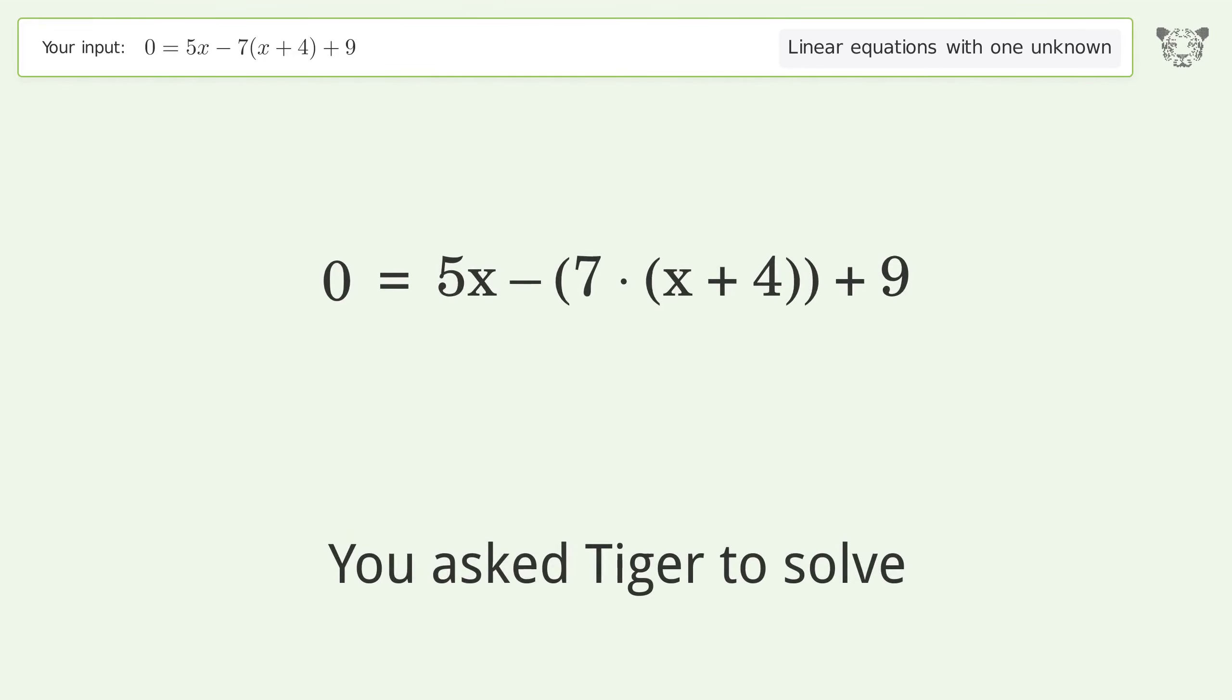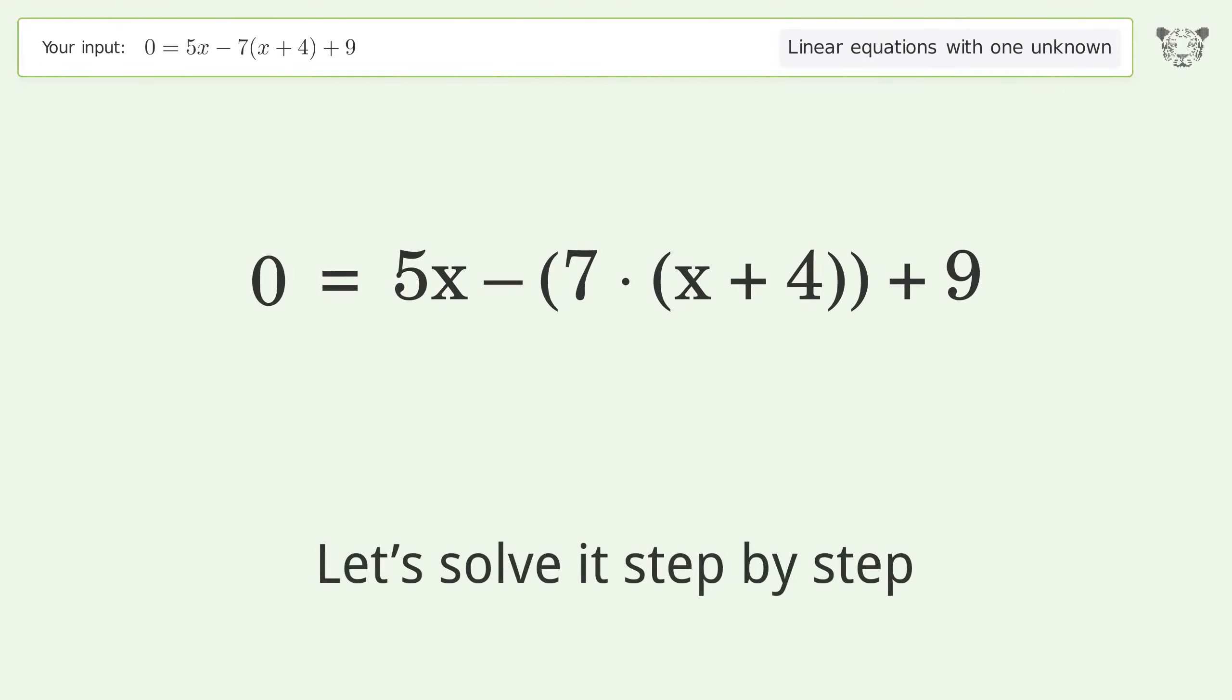You asked Tiger to solve this. It deals with linear equations with one unknown. The final result is x equals negative 19 over 2. Let's solve it step by step.